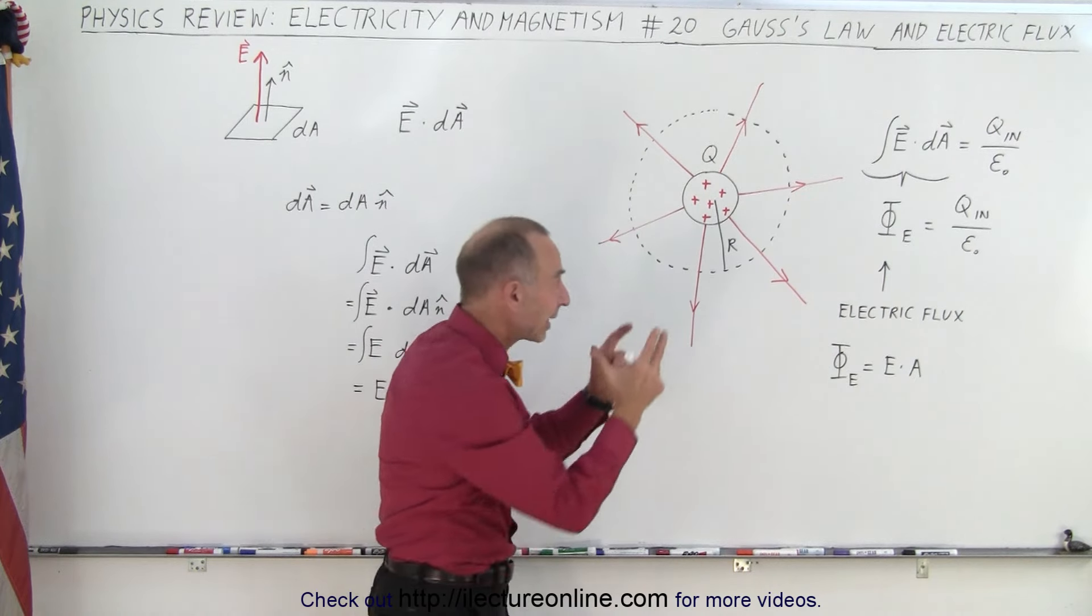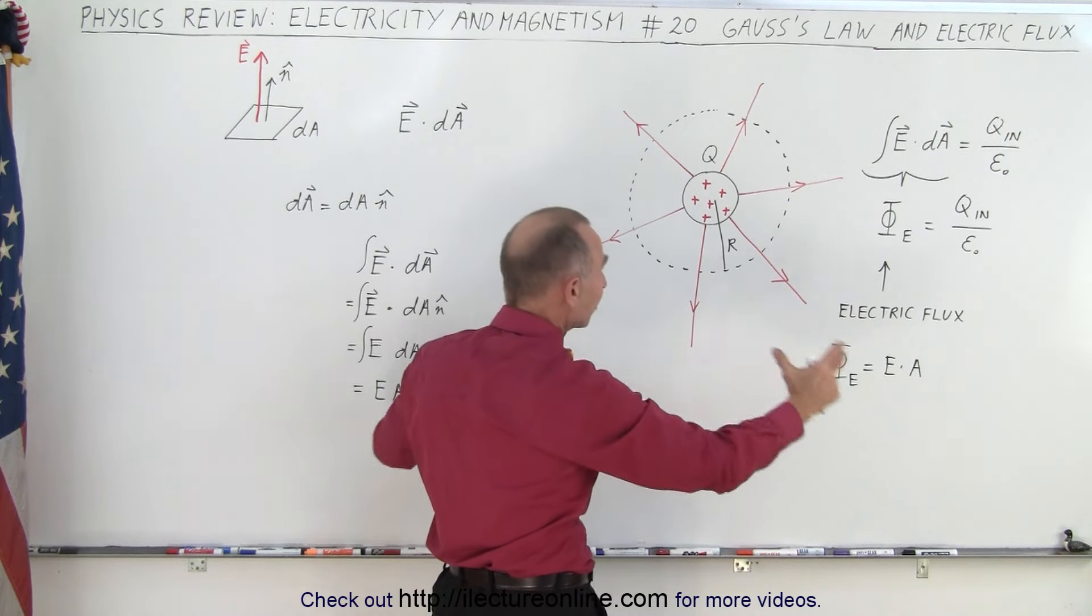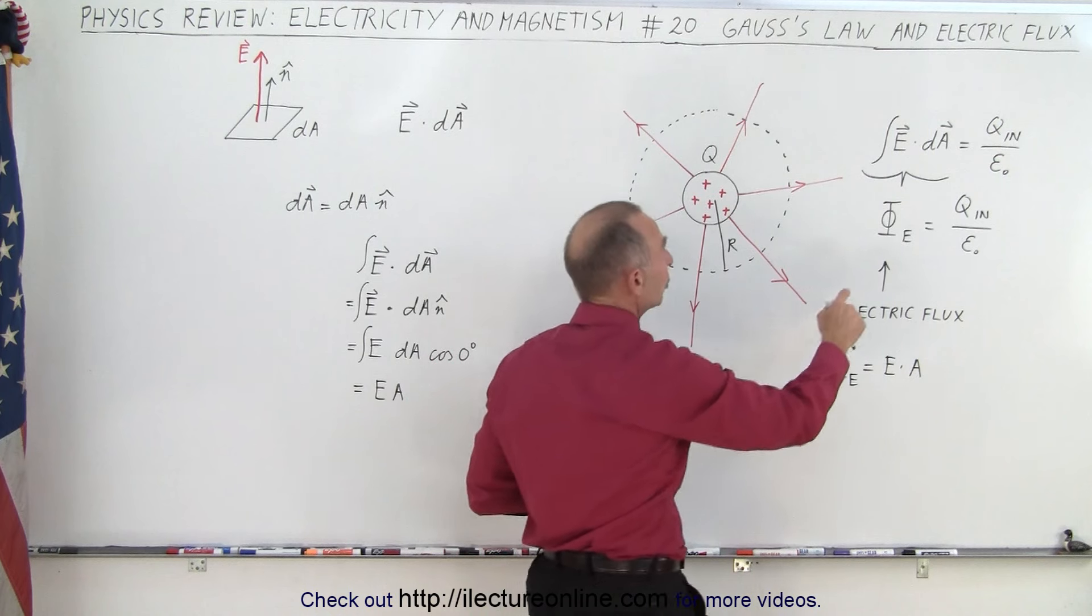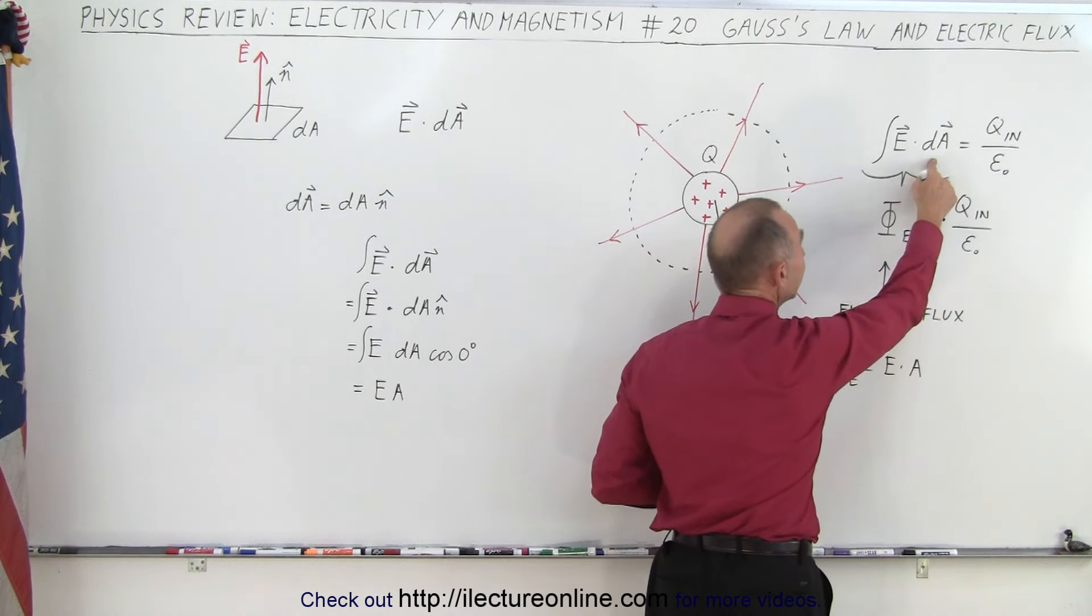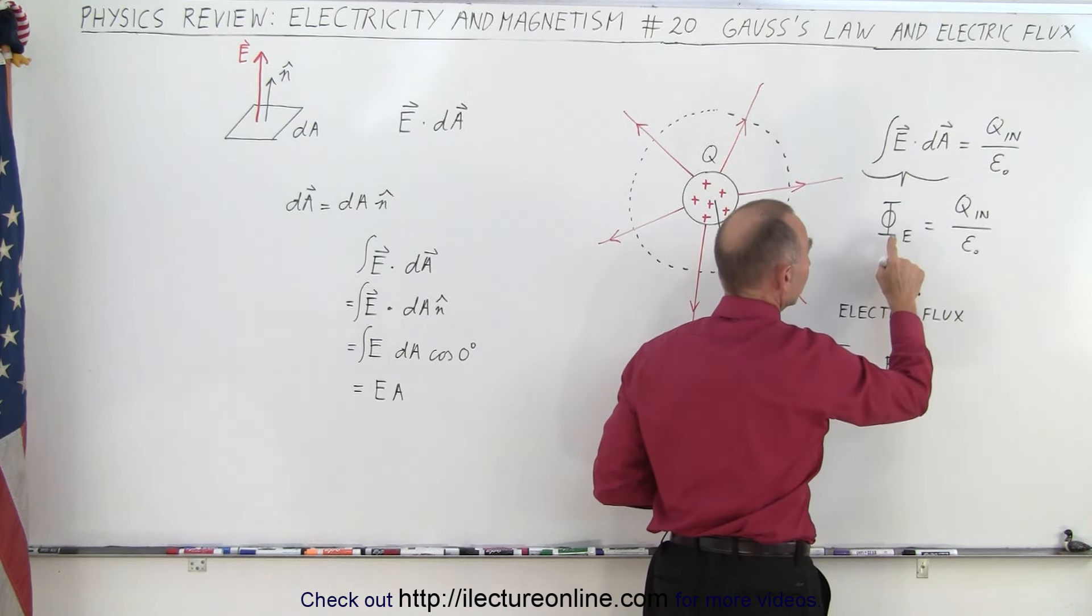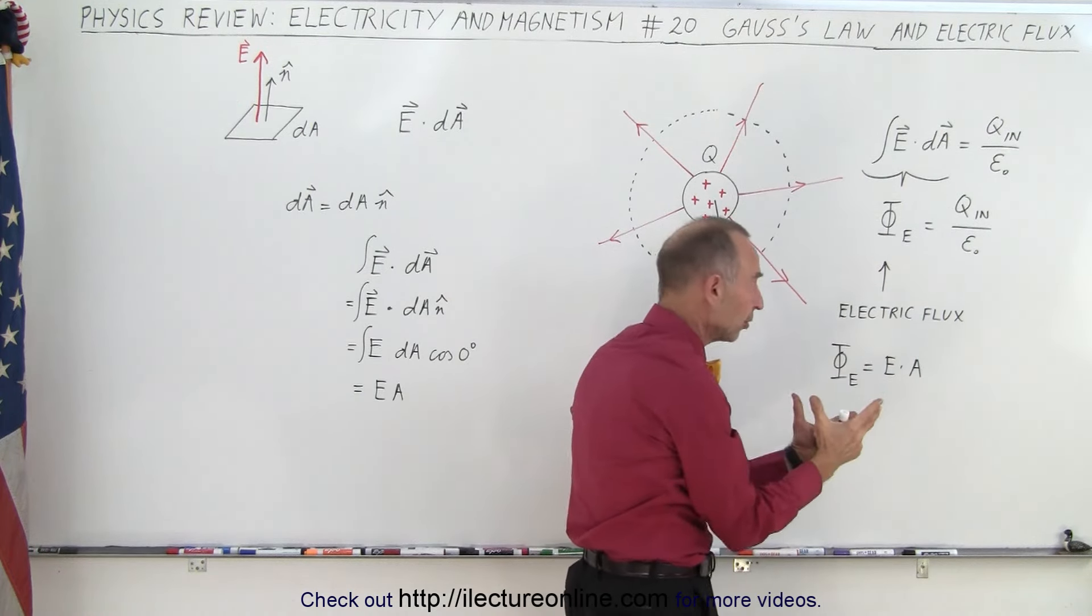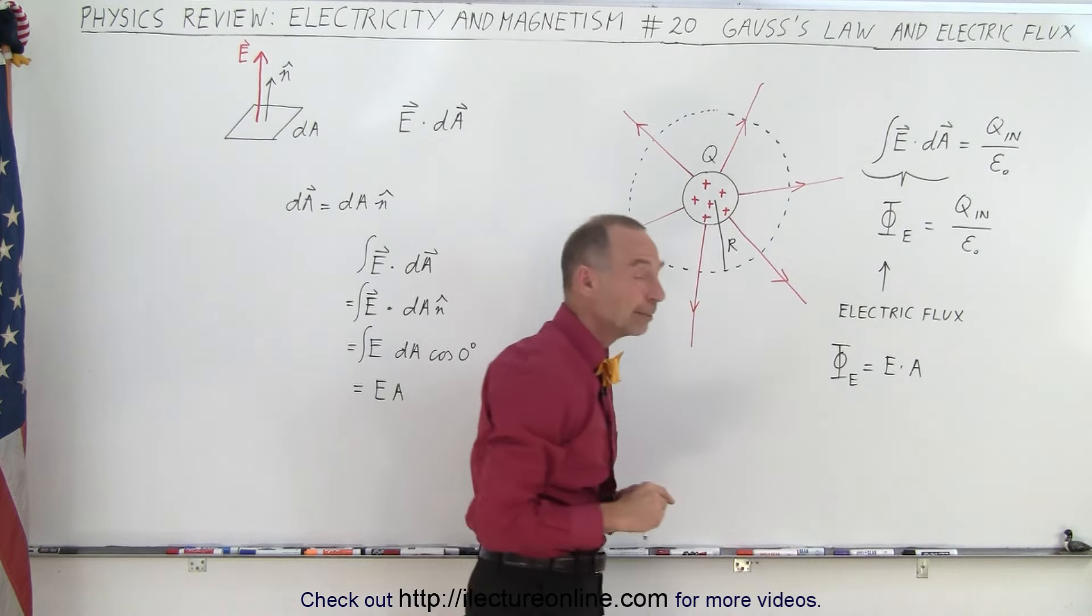But it turns out that the electric flux emanating away from a charge is going to be equal to the integral of E dot dA. If that's true, if this is one and the same, that means we can also write the electric flux as being equal to the charge inside the surface divided by epsilon sub nought.